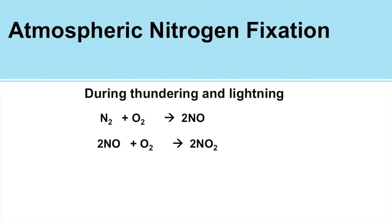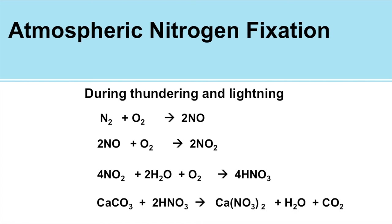Nitric oxide (NO), present high up in the air, combines again with oxygen in the atmosphere and forms nitrogen dioxide (NO₂). When nitrogen dioxide is in the atmosphere and it suddenly starts raining, the nitrogen dioxide, oxygen, and water all together react and form nitric acid (HNO₃). This nitric acid falls on the earth's surface in the form of acid rain.